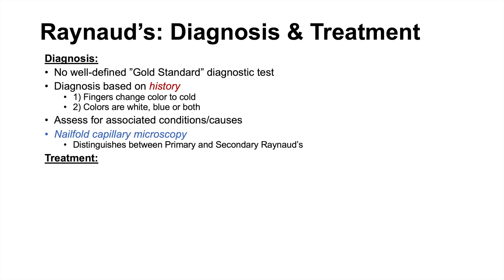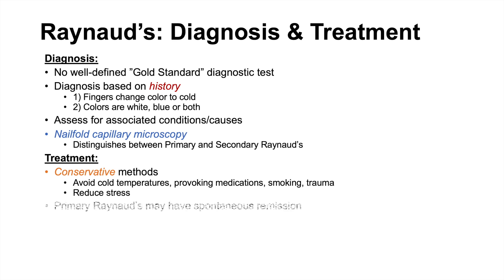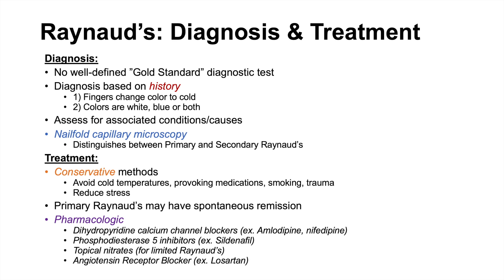Treatment begins with conservative methods: avoid triggers such as cold temperatures, provoking medications like beta blockers, smoking (nicotine), vibration-induced trauma, and stress. Primary Raynaud's may have spontaneous remission, so a more conservative approach is appropriate. If conservative methods haven't worked, pharmacological treatments include dihydropyridine calcium channel blockers like amlodipine or nifedipine, phosphodiesterase-5 inhibitors like sildenafil, topical nitrates (generally for limited Raynaud's), angiotensin receptor blockers like losartan, and selective serotonin reuptake inhibitors like fluoxetine.